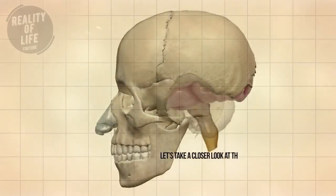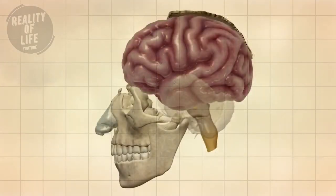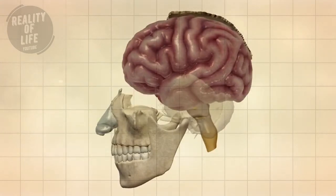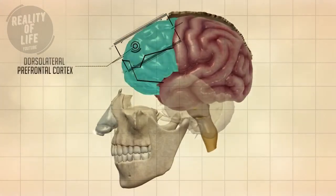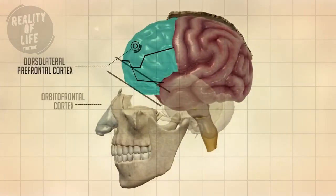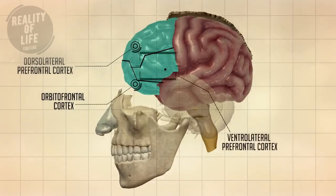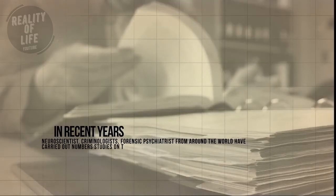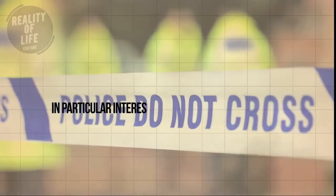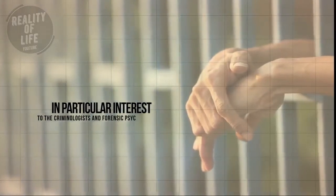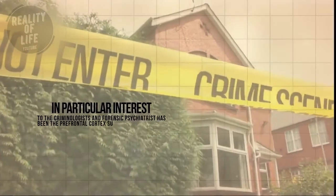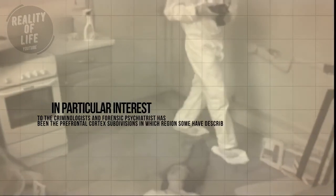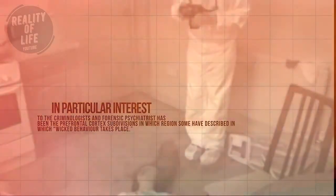Let's take a closer look at the prefrontal cortex subdivisions. This area of the brain has been divided into three main subdivisions: the dorsolateral prefrontal cortex, the orbital frontal cortex, and the ventral lateral prefrontal cortex. In recent years, neuroscientists, criminologists, and forensic psychiatrists from around the world have carried out a number of studies on the human brain, with particular interest in the prefrontal cortex subdivisions — regions some have described as where wicked behaviour takes place.